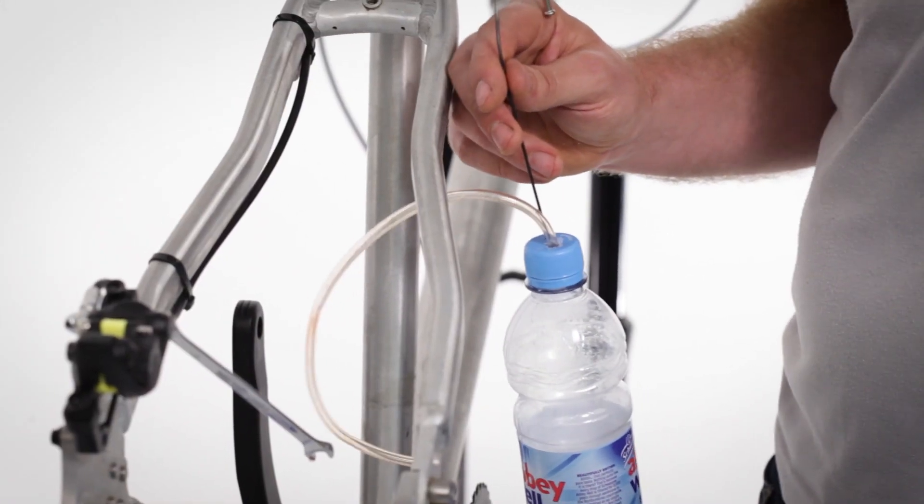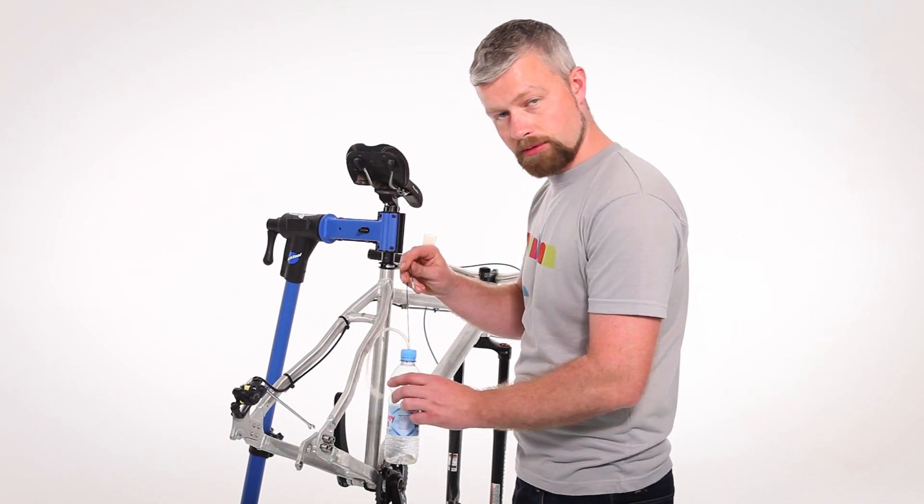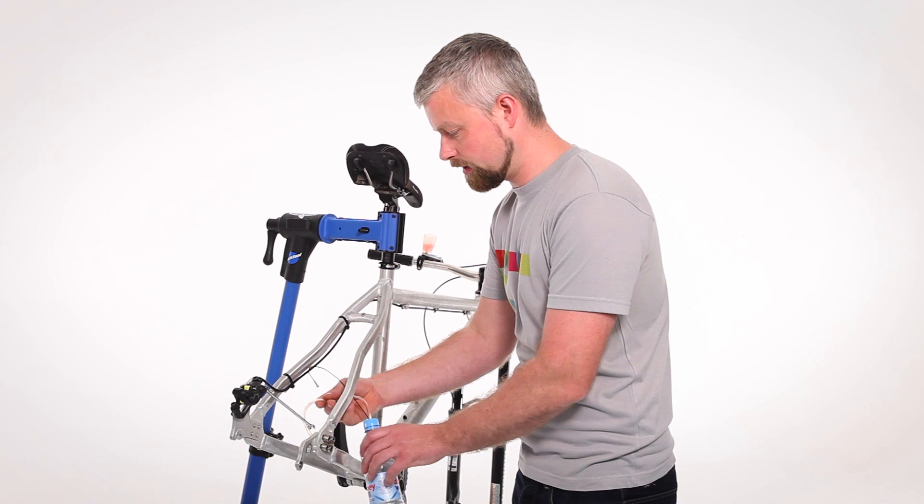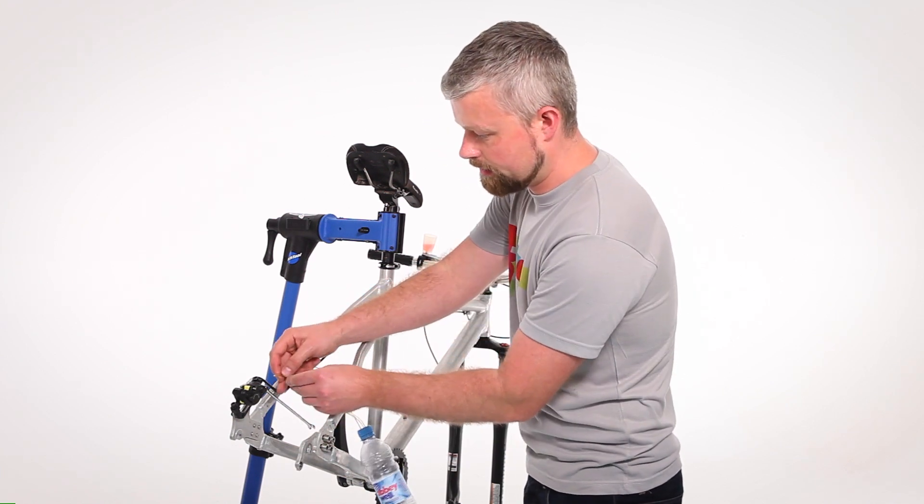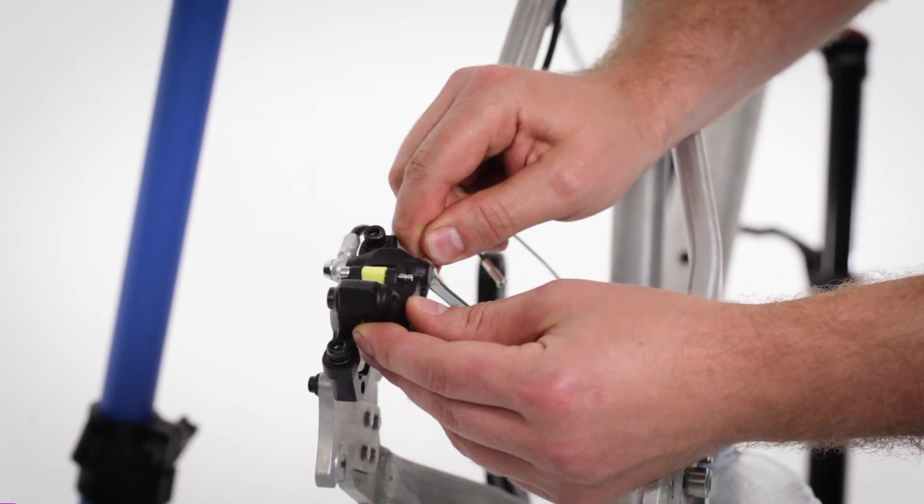The next step involves bleeding the fluid back through in the other direction, so we need our bottle contraption that we've made. Find a place to secure that and with the spanner still in place, fit the hose onto the bleed nipple.